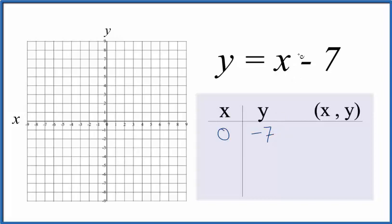Let's choose something a little bit bigger here so we can keep numbers that show up on our graph. So if we said seven for x, seven minus seven, that's zero.